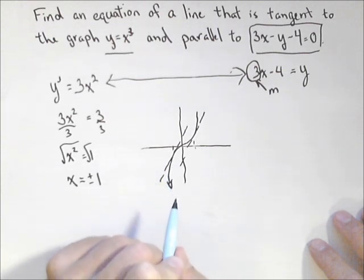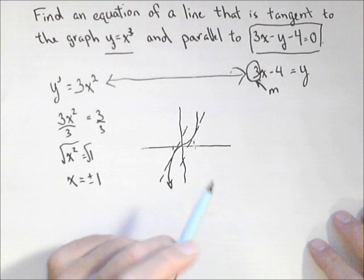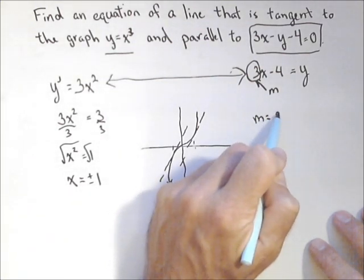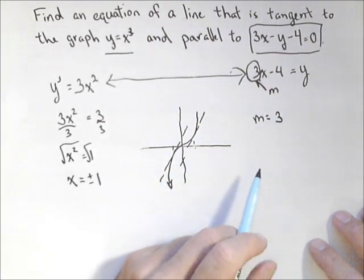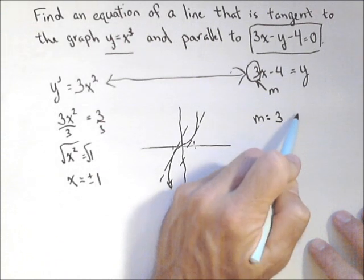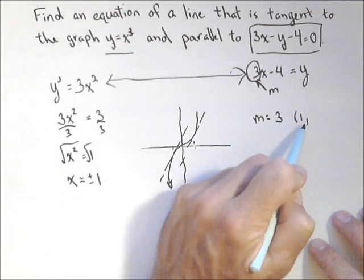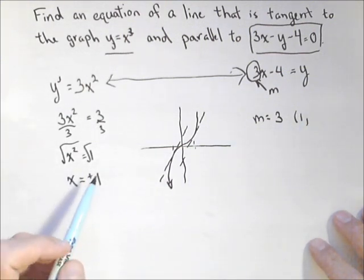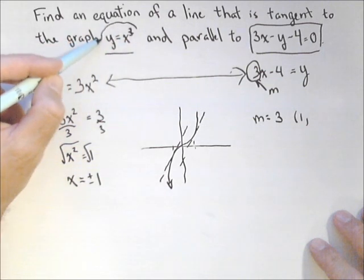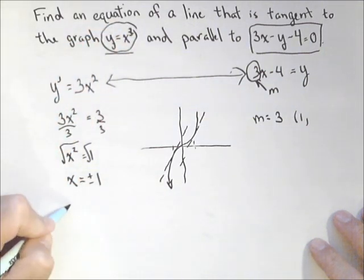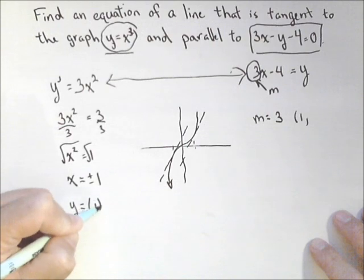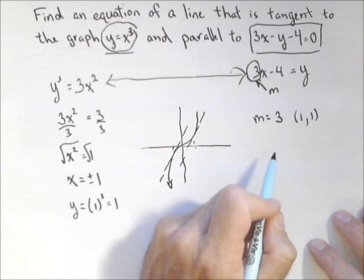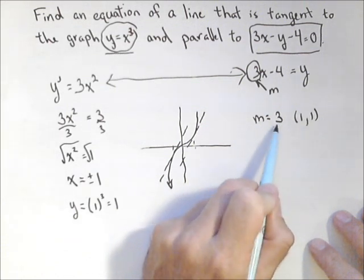Now, two things we need to find a tangent line, or any linear function. The slope and a point that it goes through. We already know that the slope for both lines is 3. And we know the x values for both lines. One of them is 1, the other one is negative 1. Now, what we need is the y value. Well, we go back to the original function for that. So, y equals positive 1 cubed, which is 1. So that gives us this y value. So we have our point, and we have our slope.